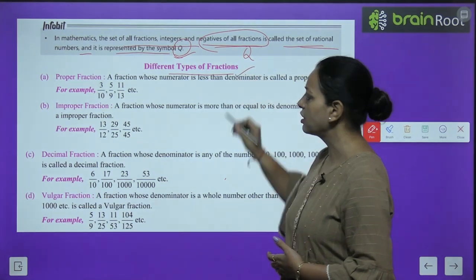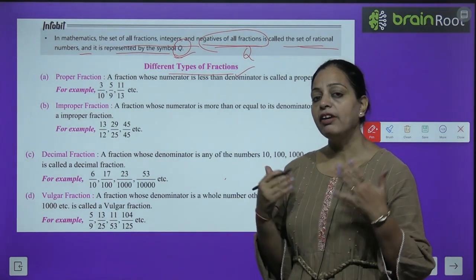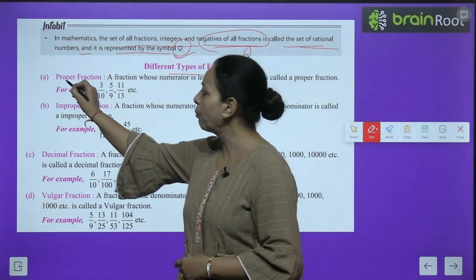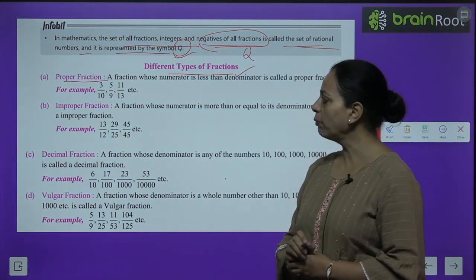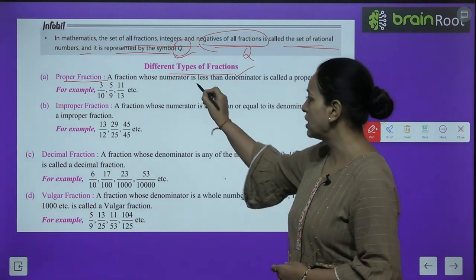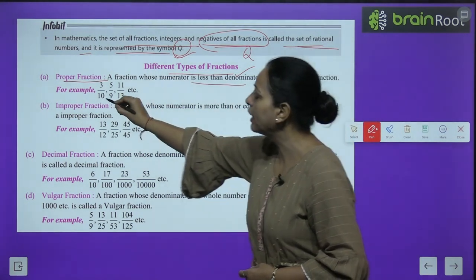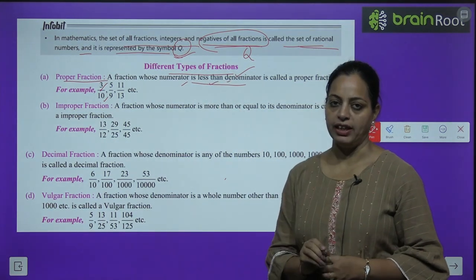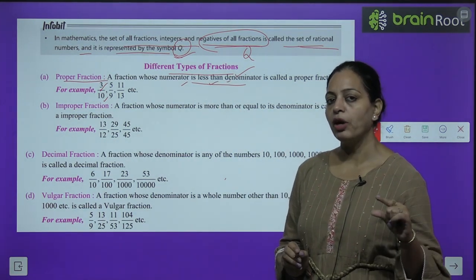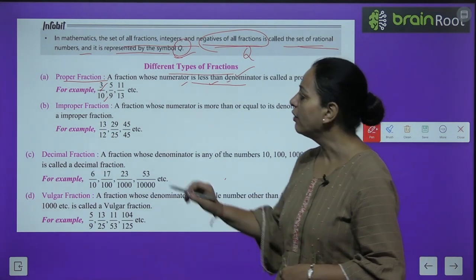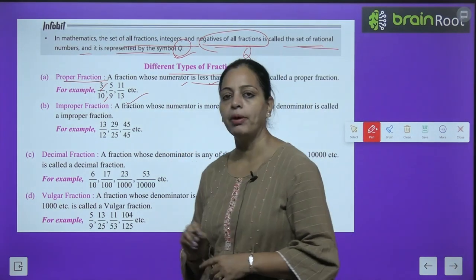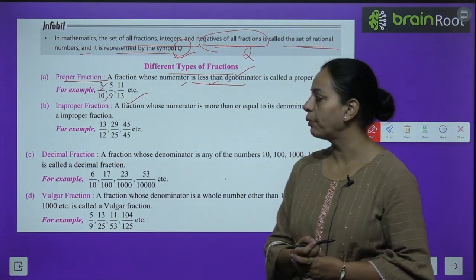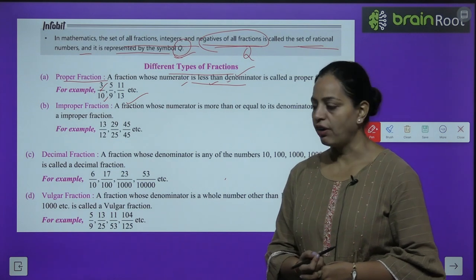Different types of fractions — the first one is proper fraction. A proper fraction is one whose denominator is bigger than the numerator, i.e., numerator is less than denominator. Examples: 3/10, 5/9, 1/3, etc.